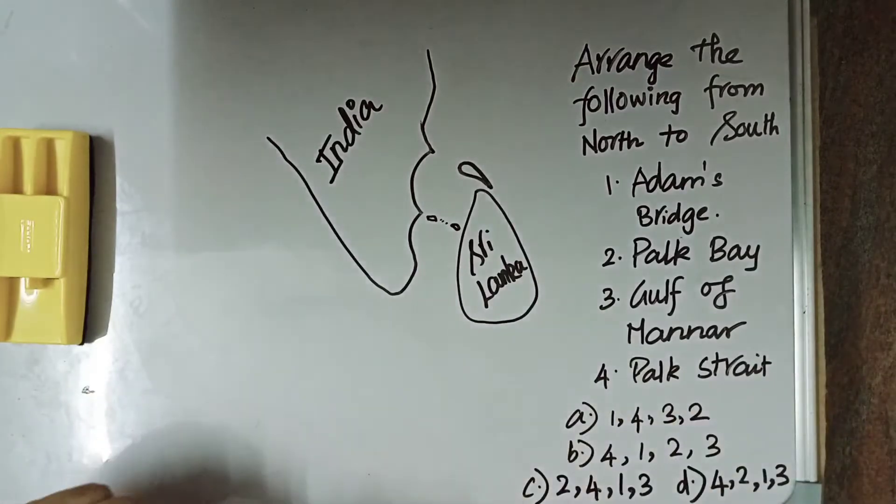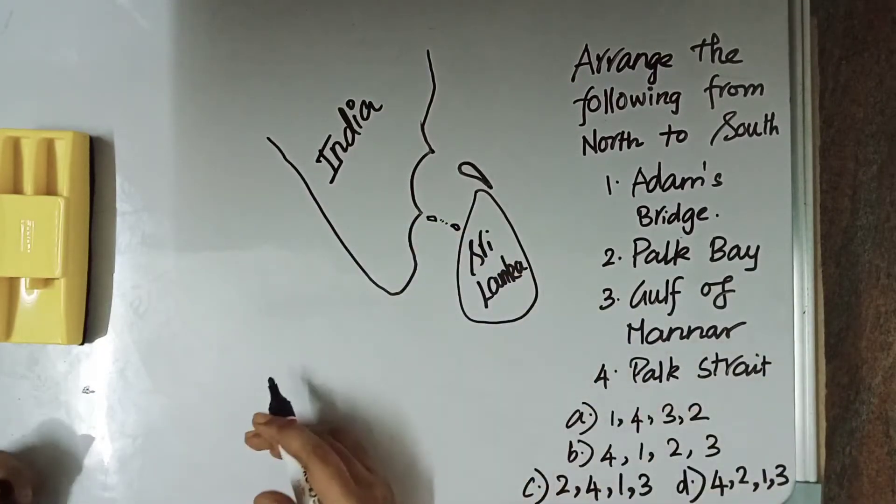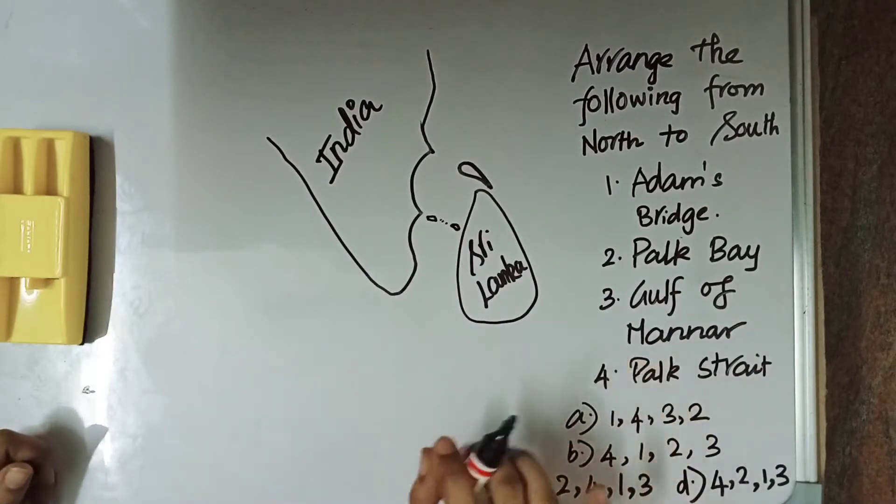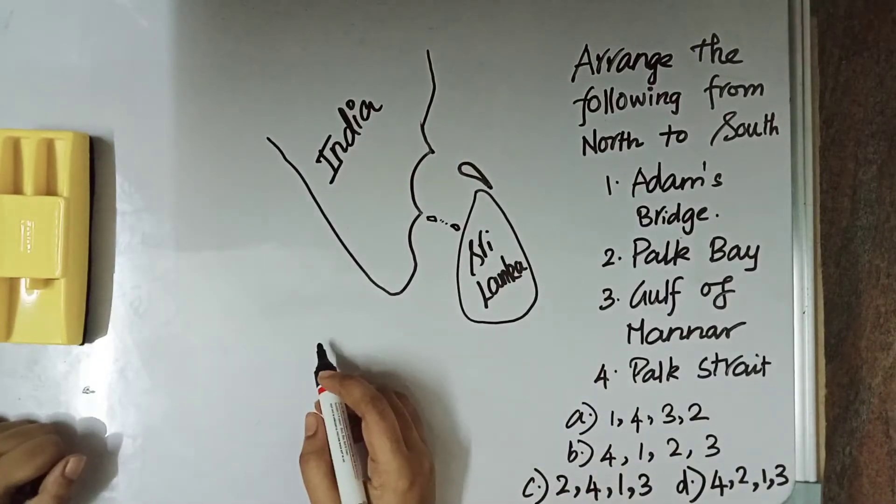I have a question for you. So, this is India, this is Sri Lanka. Sri Lanka is our neighbor country. It is an island country. Does not share land boundary but it has a maritime boundary with India.